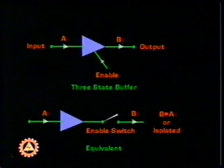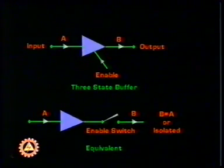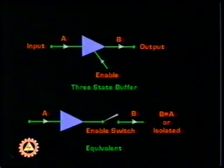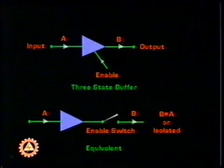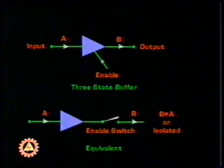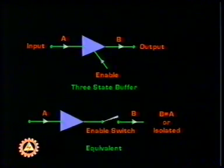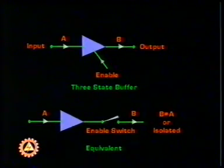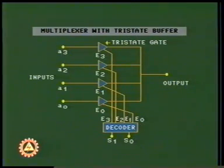A tri-state buffer is the simplest of three-state gates. It has one output, one data input, and one enable line. Enabling the gate by activating the control input makes data appear at the output like a normal buffer. Disabling the gate leads the output to a high impedance state. As shown in the figure, a multiplexer may be constructed using tri-state gates and a decoder.